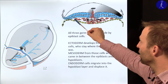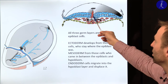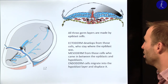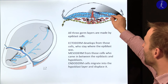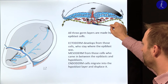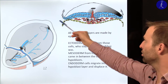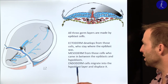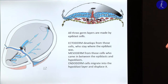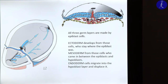Mesoderm is made by those cells which come down and then move to the side, coming in between the former epiblast and hypoblast layers. Endoderm, the third layer, is made by those cells which move further down and invade the hypoblast layer, pushing the hypoblast cells to the side and displacing the hypoblast layer. It is very important that the endoderm is not made from hypoblast — endoderm cells originate from the epiblast and take the place of the previous hypoblast cells.